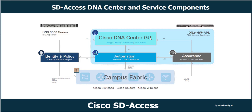Let me start talking about the Cisco DNA Center components. As you can see here, we have Cisco DNA Center GUI, or Graphical User Interface. This is the graphical user interface for design, policy, provisioning, and assurance. This is the place where you will administer the network, provision the Campus Fabric, maintain it, and it can provide many features regarding automation.